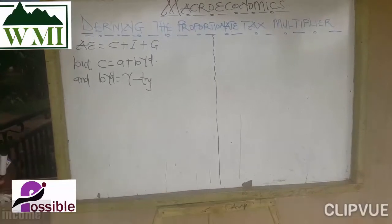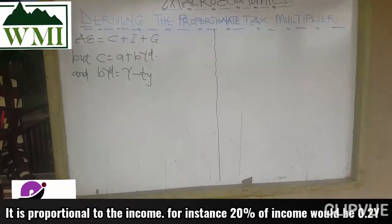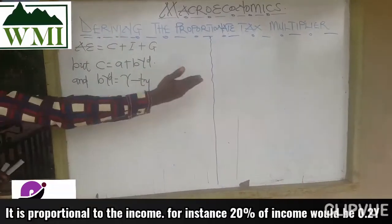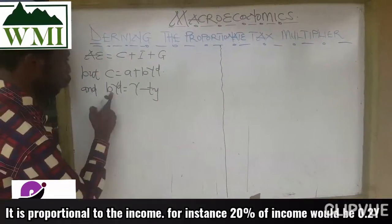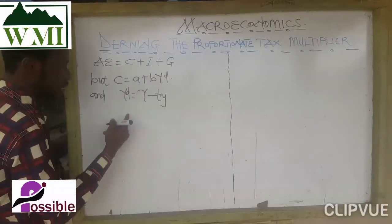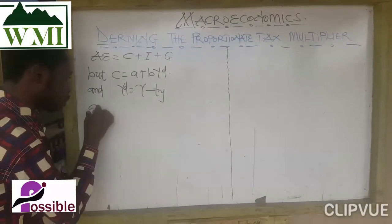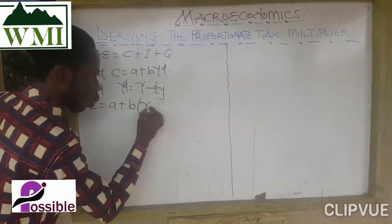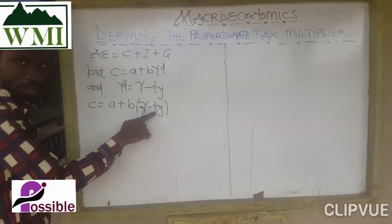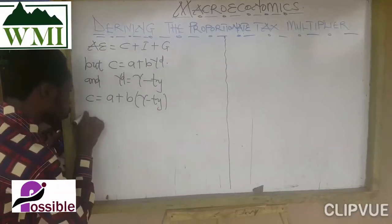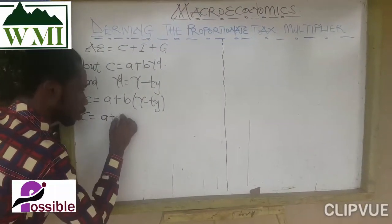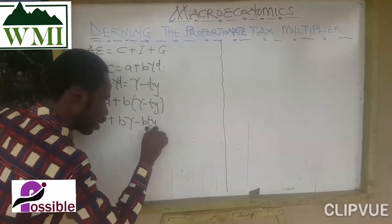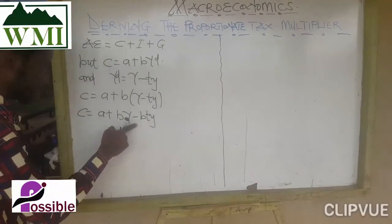We are assuming that transfer payment is not part. So if transfer payment is not part, we are going to get disposable income. The consumption function is going to be A plus B times bracket (Y minus tY). So consumption is equal to A plus BY minus BtY.